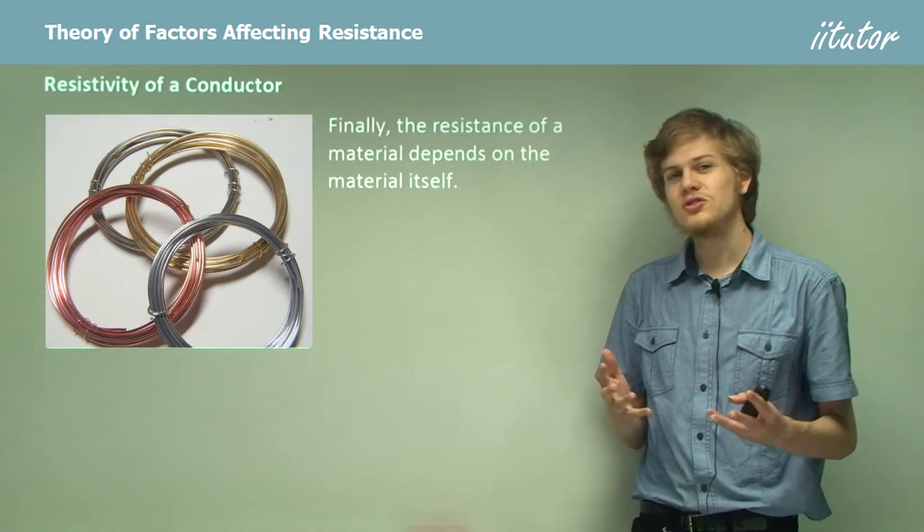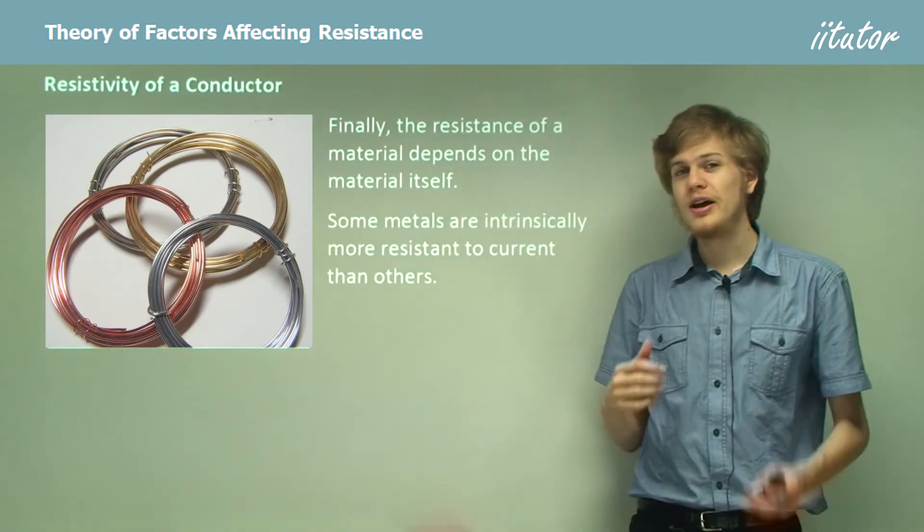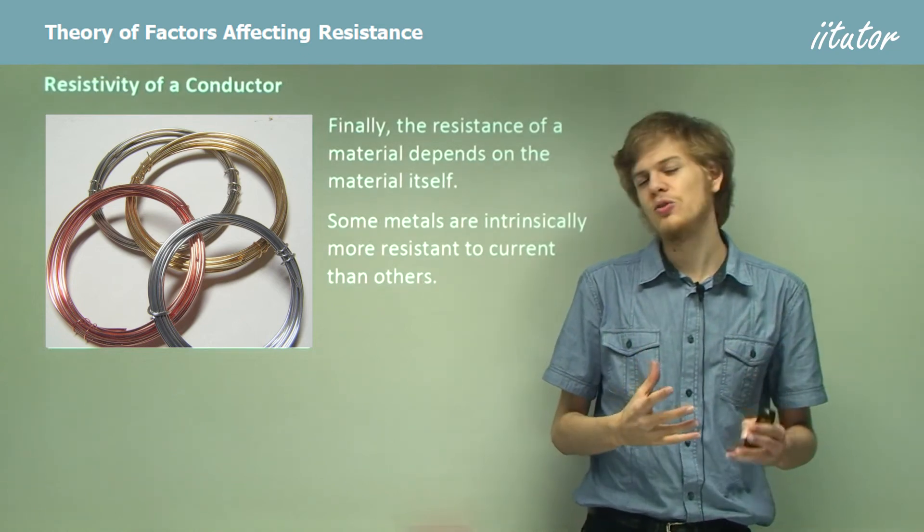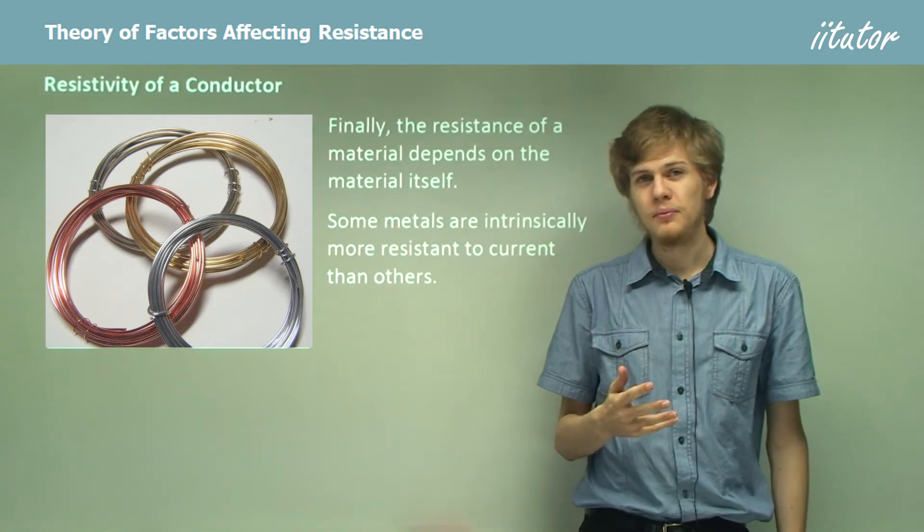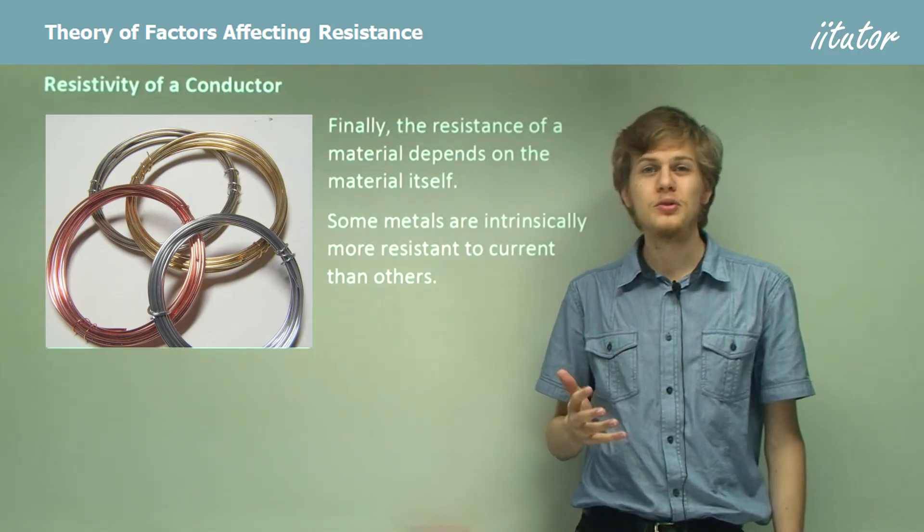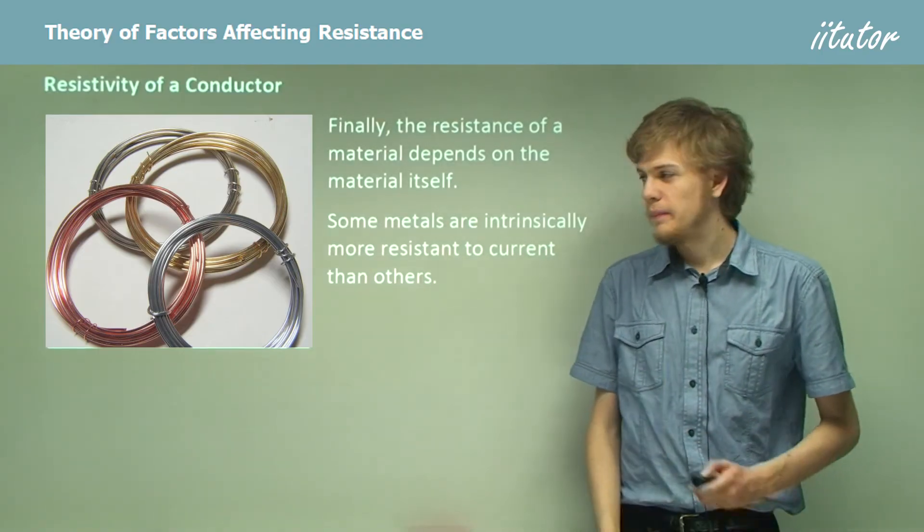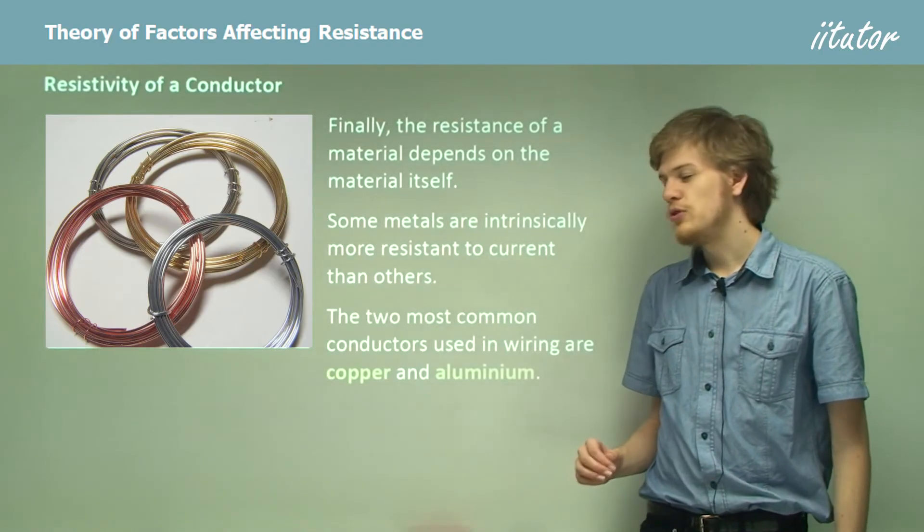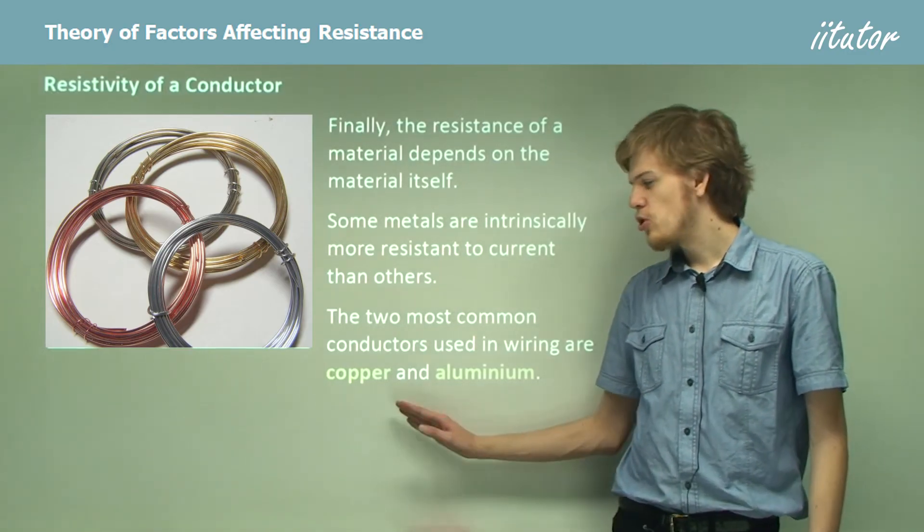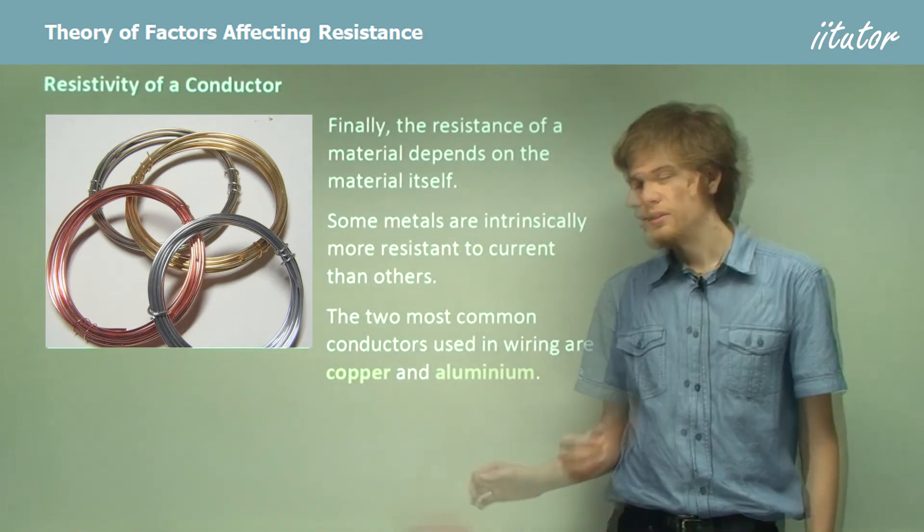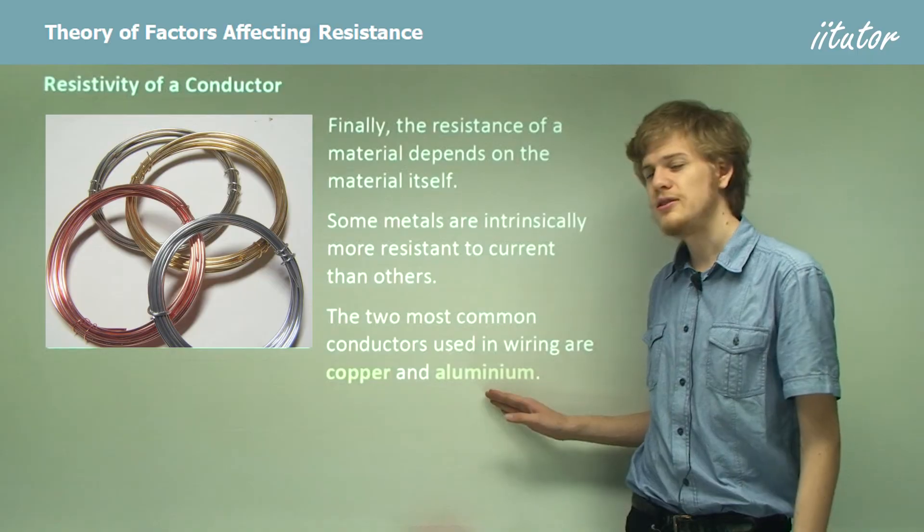There's one other thing that can affect the resistance of material and that's the material itself. So some materials are intrinsically better at conducting or intrinsically worse at conducting than other materials. For example, copper conducts electricity better than aluminium does. And we'll get on to one of the interesting consequences of this in a moment. The two most common conductors used in wiring are copper and aluminium. So remember copper has a higher conductivity than aluminium. And aluminium has a higher resistivity and a higher resistance than copper.